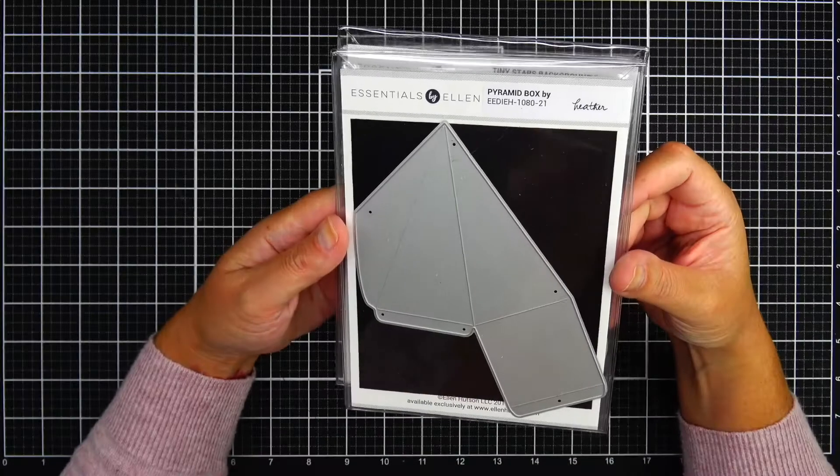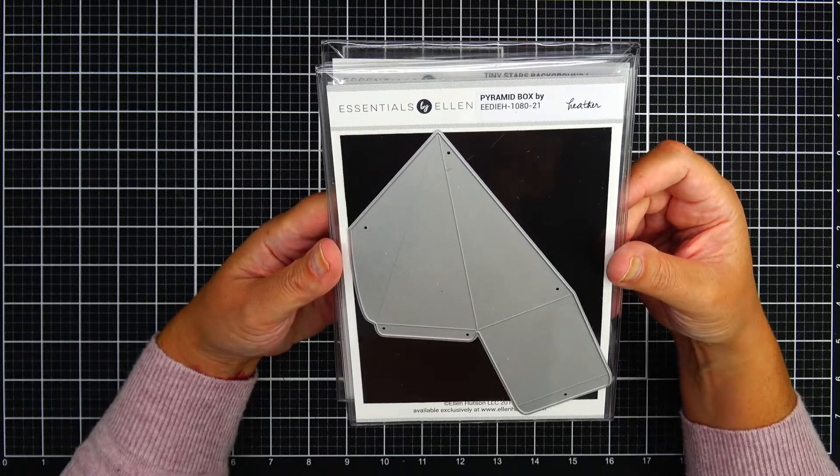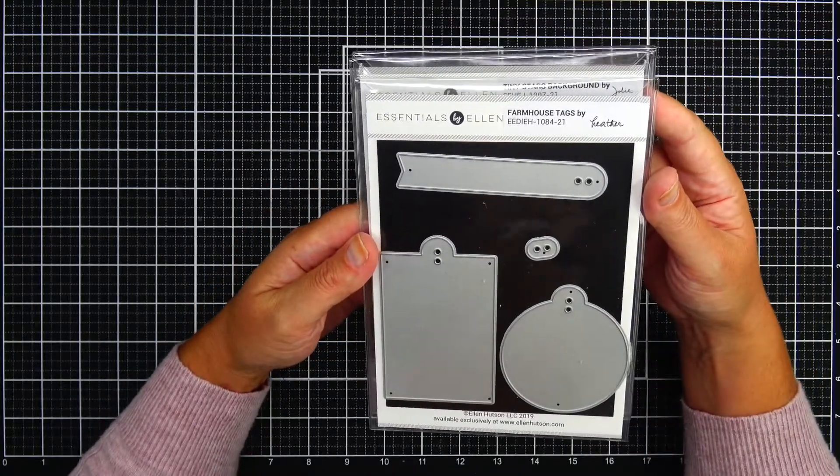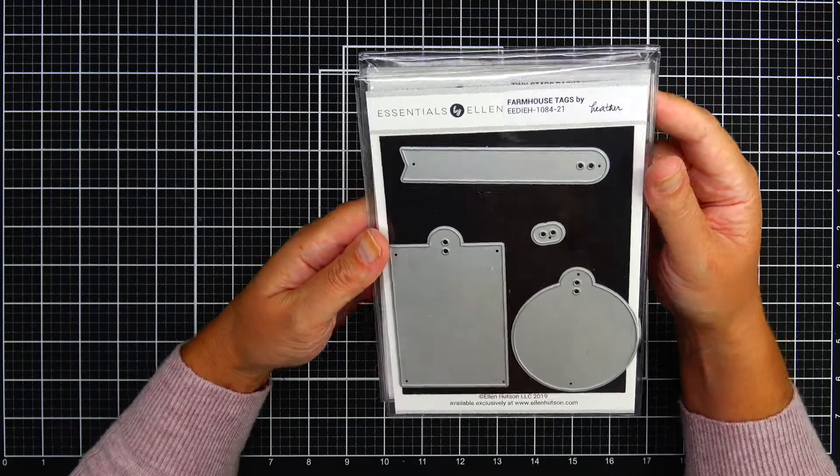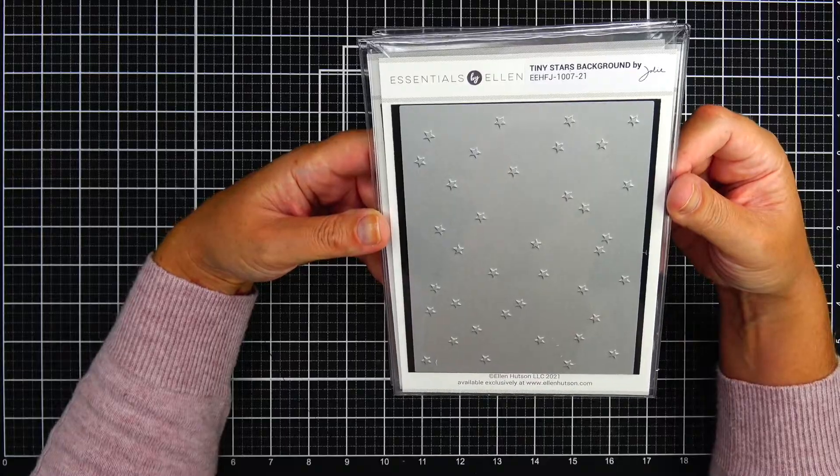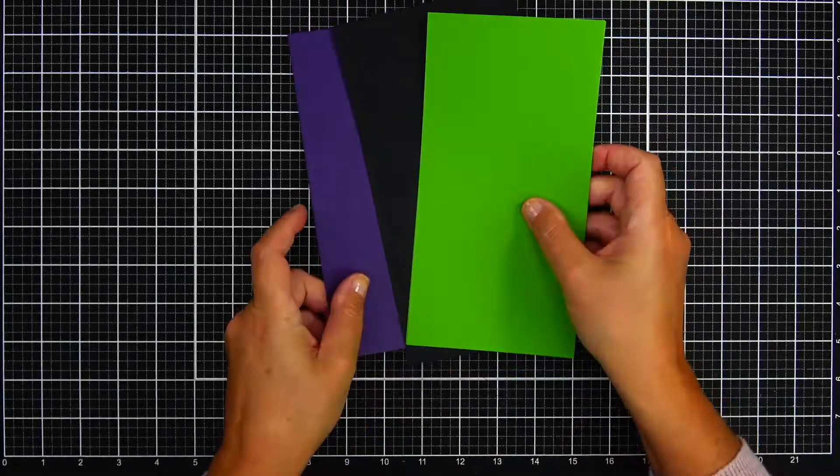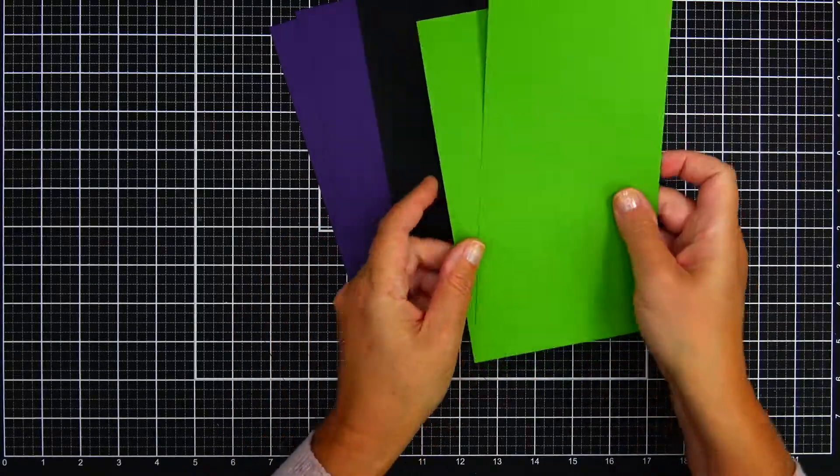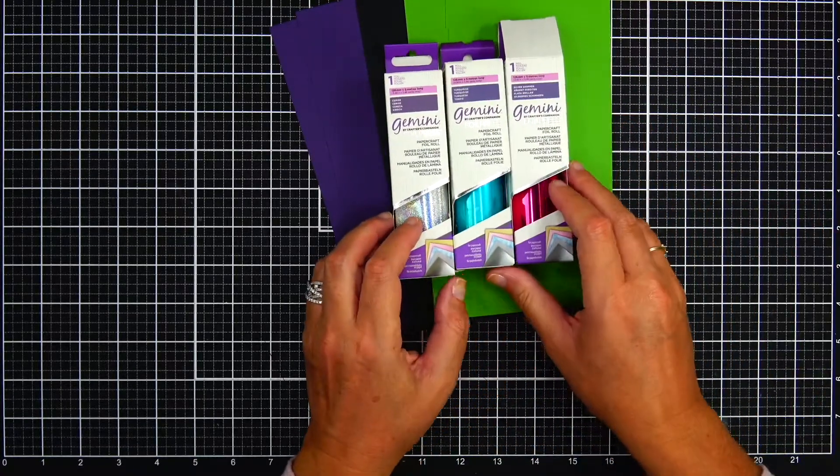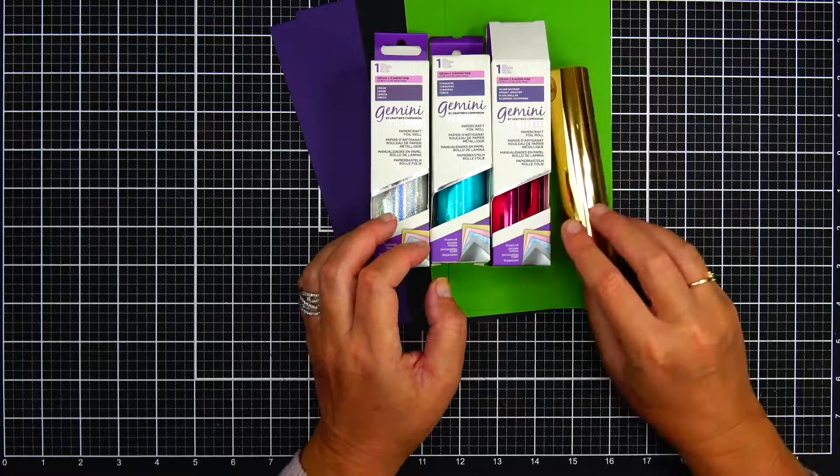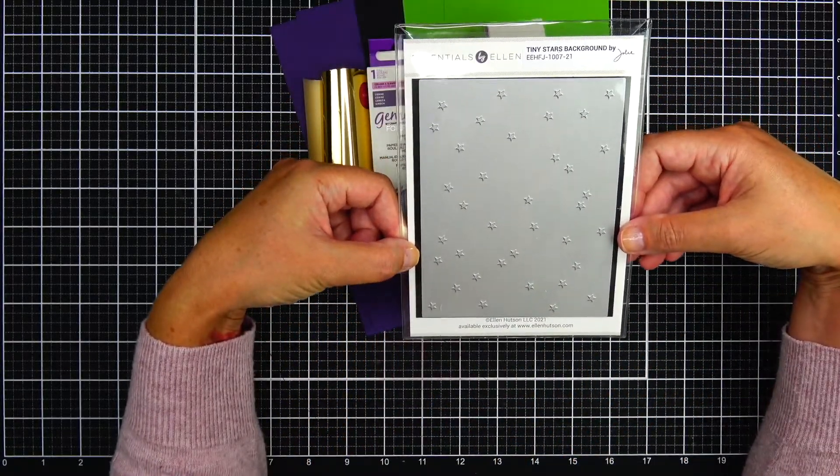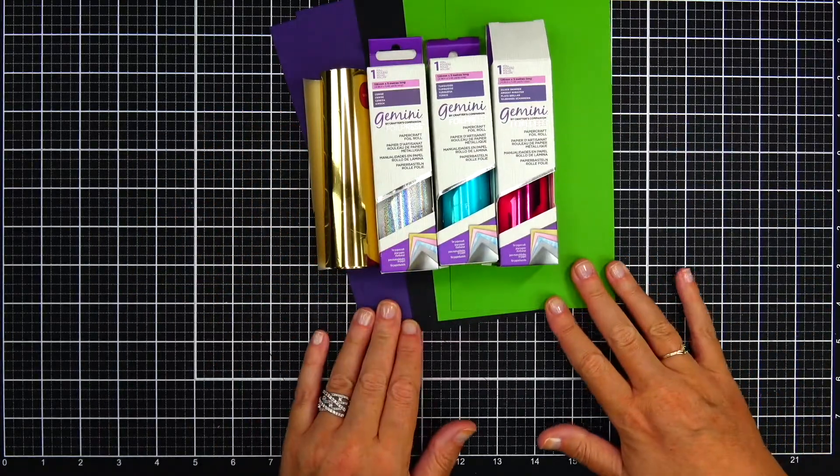This is the pyramid box die. I'm going to use two die cuts from this die to assemble the box. Next is farmhouse tags, and then tiny stars background, which is what I'm going to be putting through my foil press machine. I have pre-cut panels of Concord 9th cardstock ready to go. I picked eggplant, black, and parsley.